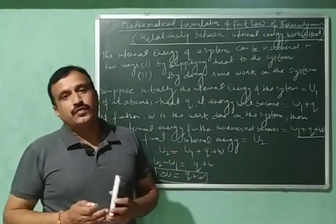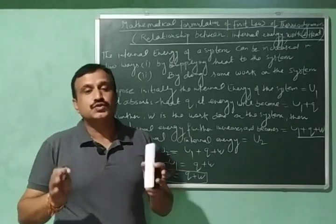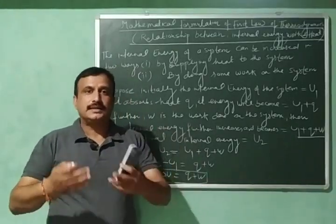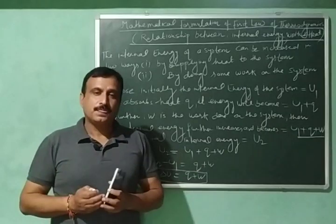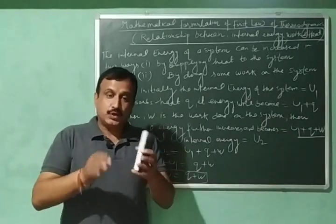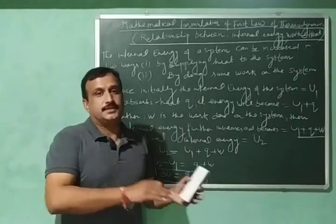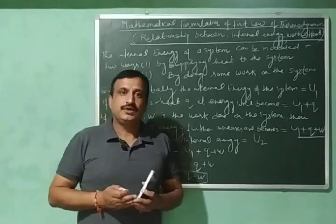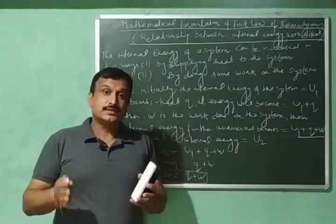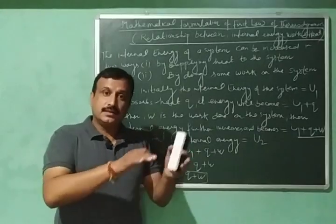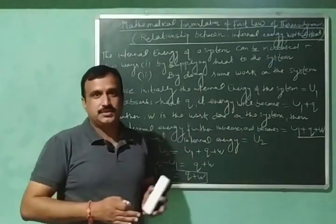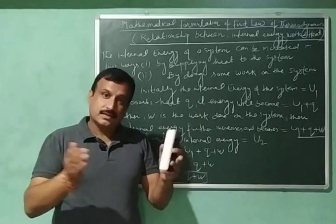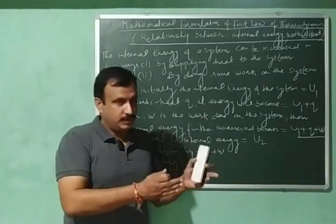The internal energy of a system can be increased in two different ways. Number one is by supplying some heat to the system, and number two is by doing some work on the system. If the work is done on the system, then the internal energy of the system increases. And if the work is done by the system, then its internal energy decreases.